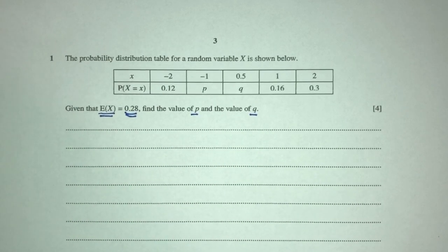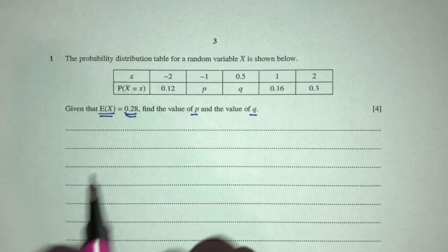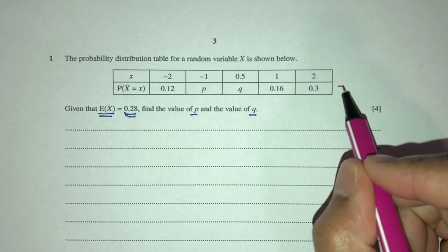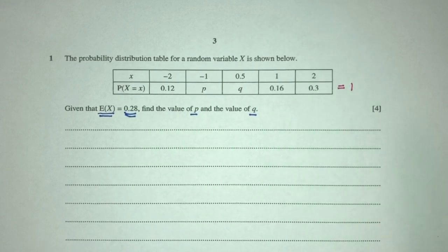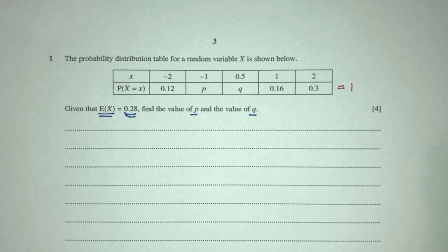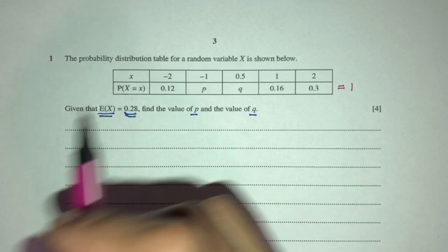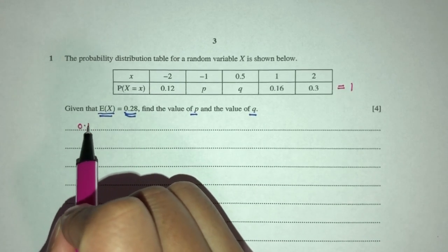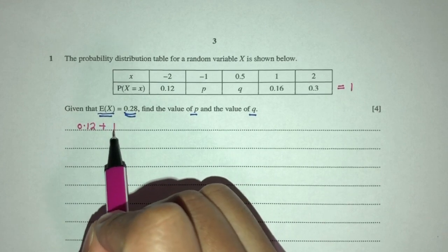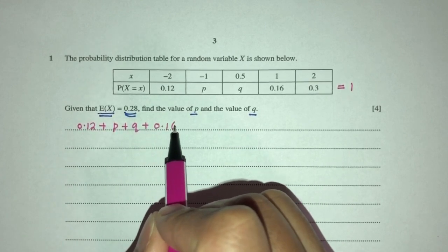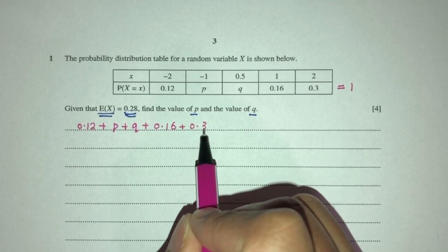First thing first, we should know right away that from the table itself, if you were to add everything here, all these values, you're supposed to get one for their sum. That's the first thing you should know because the total of the probabilities should be 1. So, let's use that to form an equation. We have 0.12 plus P plus Q plus 0.16 plus 0.3 has to be the value of 1.